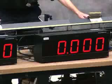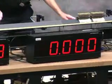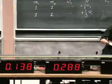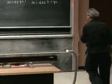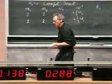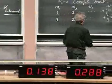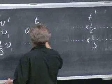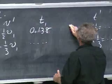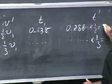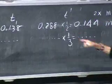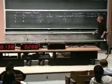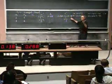There we go — T1 reads 138 ms and T prime reads 288 ms. Dividing 288 by 2 gives 144 ms. The difference is only 6, about four percent off, completely within the two-and-a-half percent uncertainty per measurement.